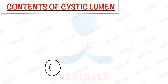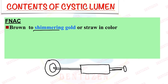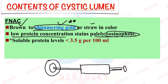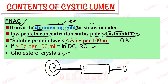Regarding the contents of the cystic lumen: when we perform fine needle aspiration cytology (FNAC), the fluid from a radicular cyst can give a shimmering gold appearance, varying from brown to shimmering gold or straw color. This shimmering gold appearance is due to the presence of cholesterol in the lumen. The fluid has low protein concentration and is eosinophilic on staining. If protein levels are more than 5 g per 100 mL, we consider it a dentigerous cyst or radicular cyst; if less than 5 g per 100 mL, we consider it an OKC.